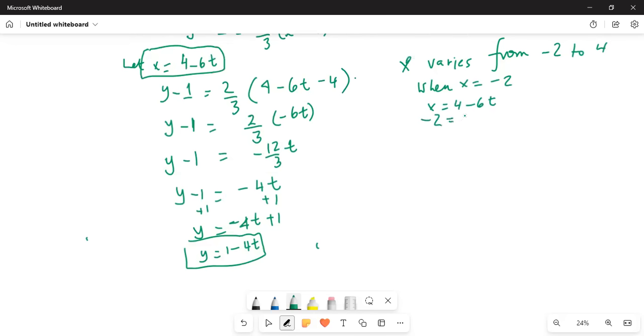When x is -2, we have -2 equals 4 minus 6t. Subtract 4 on both sides, so we get -6 equals -6t. Divide by -6 on both sides, and t becomes equal to 1.